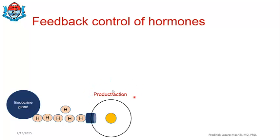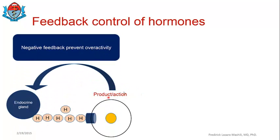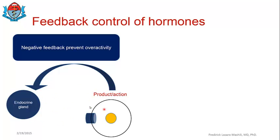Usually there is a physiological limit for this product or action — you don't want it to be overdone; it should happen at an acceptable level. So when this product or action occurs, it acts by what we call negative feedback to prevent the endocrine gland from continuing to produce the hormone, in order to prevent over-activity. This is called a negative feedback control of hormone production, preventing further action. Once the required physiological level is reached, the negative feedback mechanism prevents further hormone production, so there is no more hormone-receptor interaction and no more product or action.